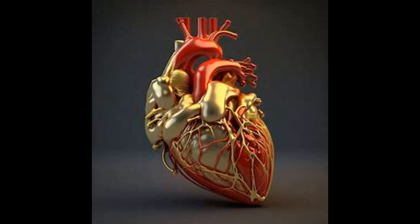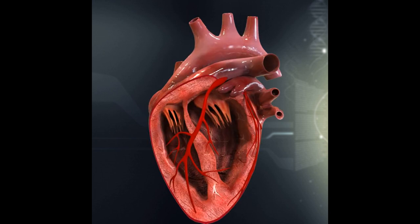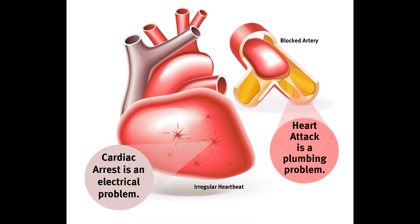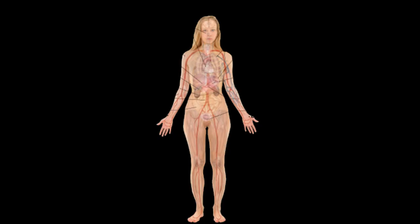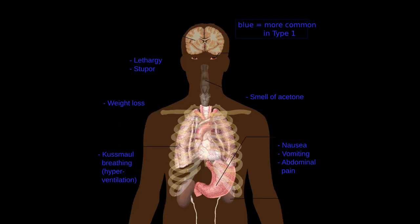At the organ level, different kinds of tissues are joined together. Organs are structures composed of two or more different types of tissues. They have specific functions and usually have recognizable shapes. Examples of organs are the stomach, heart, liver, lungs and brain.